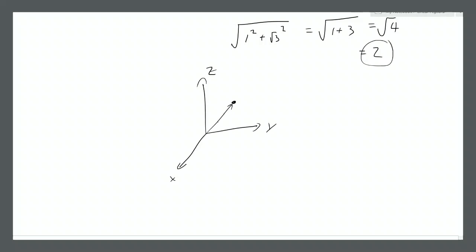In a 3-dimensional space with x, y, and z directions, for a point in that space it's not enough to just give the magnitude of the vector and an angle from one of the axes, because things can rotate around. A point can have the exact same angle from the surface and the exact same magnitude but be pointed in a completely different direction. So you need more than one angle — you need the angle from the horizontal and also the angle in the rotation direction.